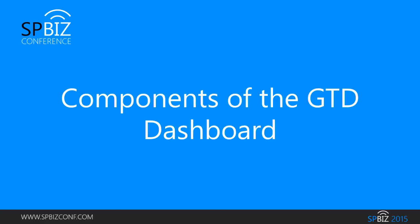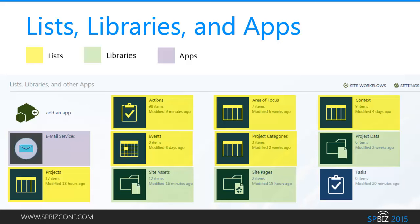Now that we've covered the basic GTD concepts, let's look at the different components that make up the system. The GTD dashboard app I built is a SharePoint sub-site created using the Team Site template. I deleted a few of the lists and libraries that weren't needed but added a few more. This slide shows all the list libraries and apps that make up the solution, and we'll take a deeper look at each one. There's one tasks list in the lower right corner that was created automatically when I created a workflow — it has no items but must remain there.